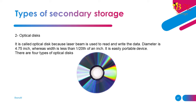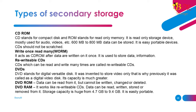Optical discs: An optical disc uses a laser beam to read and write data. Its diameter is 4.75 inches, while width is less than 1/20th of an inch. It is an easily portable device. There are four types of optical discs: CD-ROM (compact disc read only memory) — a read-only storage device mostly used for audio, videos, etc. It can store 600MB to 800MB of data. CDs should not be scratched. Write-once read-many: it acts as a CD-ROM after data is written on it once, used to store data and information. Rewritable CDs can be read and written many times.